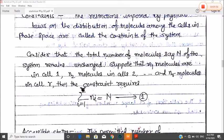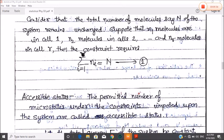Let us consider that the total number of molecules n of the system remains unchanged. Suppose that n1 molecules are in cell 1, and n2 molecules in cell 2, and so for nr molecules in cell r. So total number of constraints: n1, n2, n3. We use the summation from 1 to r: summation of ni equals capital N. We use the number of particles. Now we use the number of particles accessible states in cell 1.